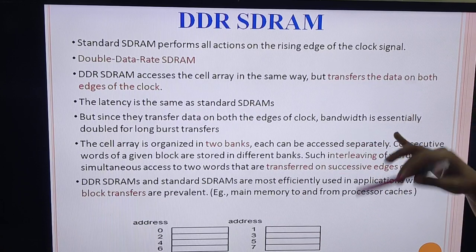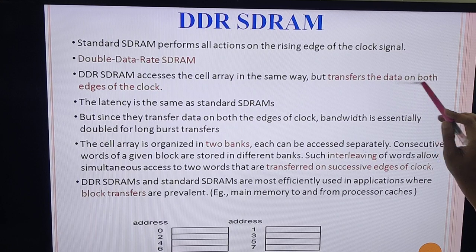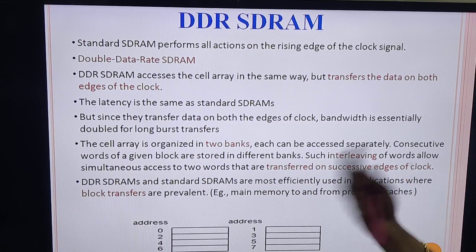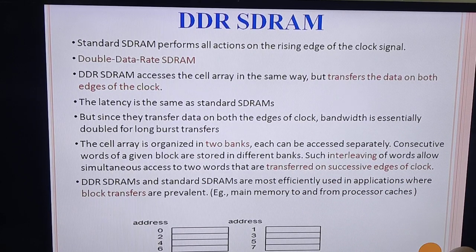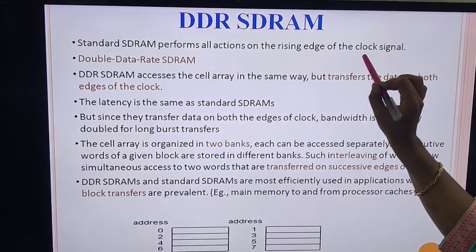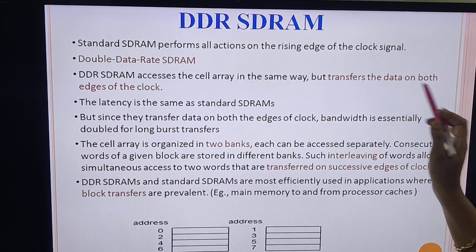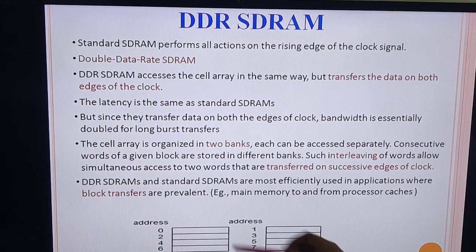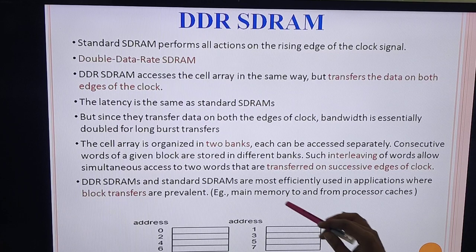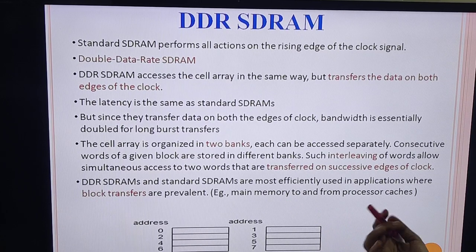Since we are using both edges of the clock, it is called double data rate because that much more information is transferred — the bandwidth is doubled compared to standard SDRAM. In standard SDRAM, data is transferred only on the rising edge; here in DDR-SDRAM, data is transferred on both edges. DDR-SDRAMs and standard SDRAMs are most efficiently used in applications where block transfers are prevalent, for example when transferring data between main memory and the processor cache.